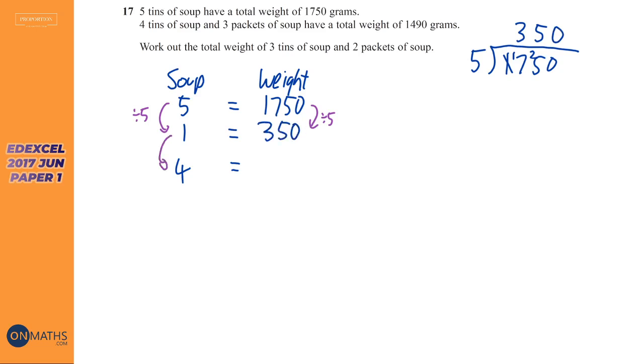Then to get to four, I need to times it by four. Times that side by four. Again, so we're doing, 350 times four. Four times zero is zero. Four times five is 20. Four times three is 12. Plus the two is 14. So it'd be 1,400.